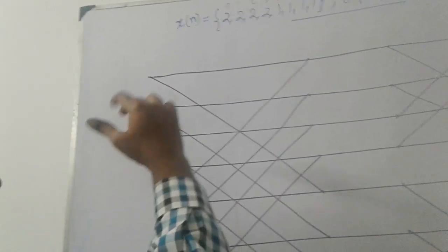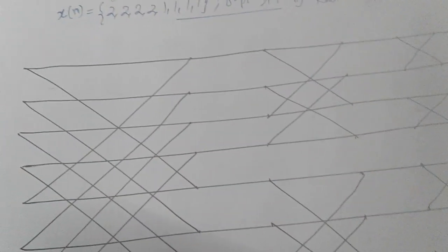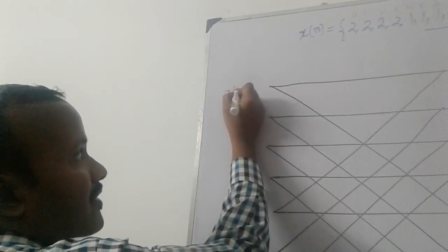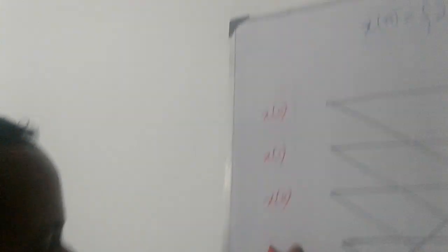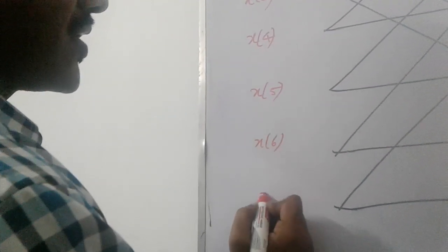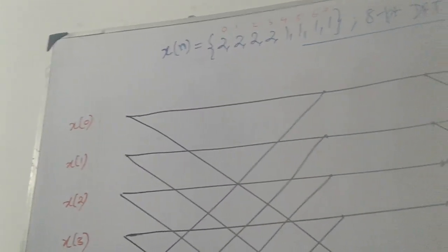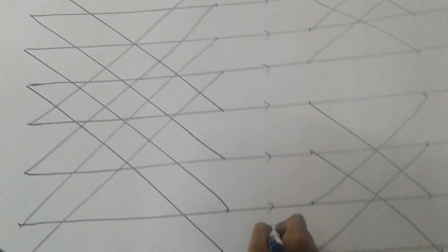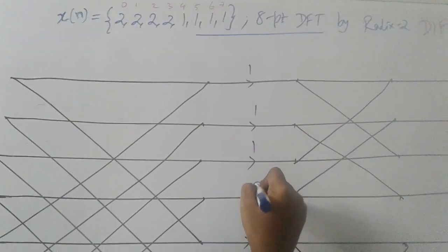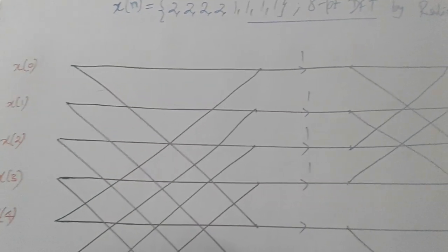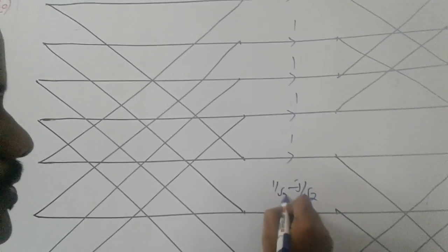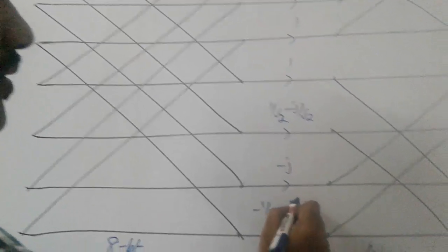In decimation in time, input was bit reversal and output was normal order. But here, input is normal order and output is bit reversal. Normal order means we write straight: x(0), x(1), x(2), x(3), x(4), x(5), x(6), and x(7). Now we have to write the phase factor. Students' mistake is they will write the phase factor in the wrong place — write it here. The values are: 1, 1, one-over-root-two minus j-over-root-two, and minus j, minus one-over-root-two minus j-over-root-two.